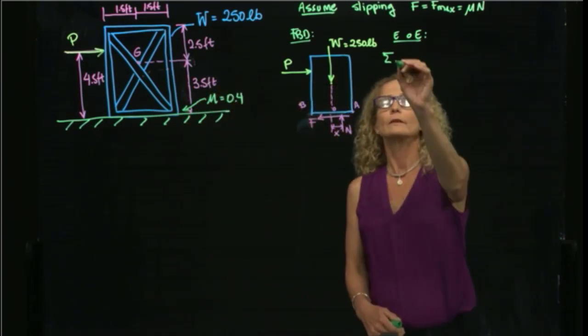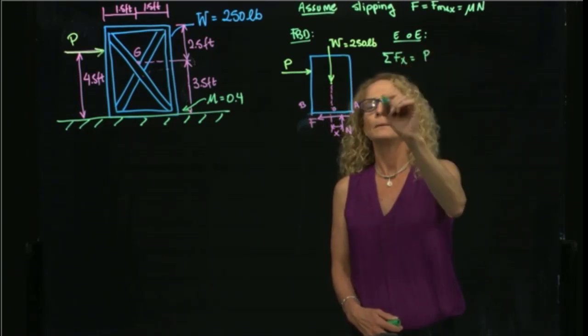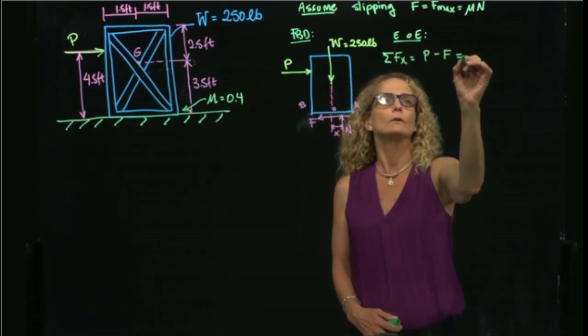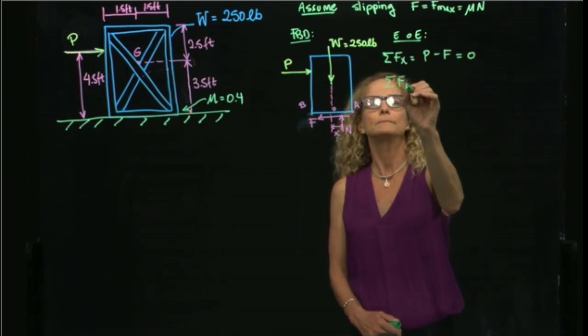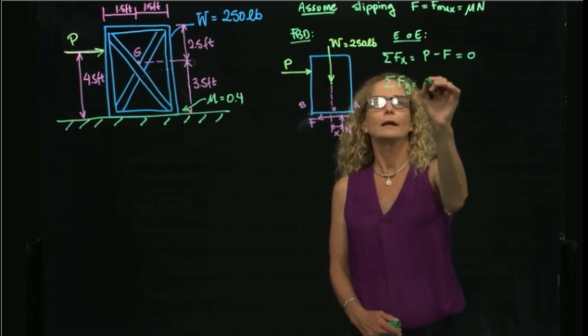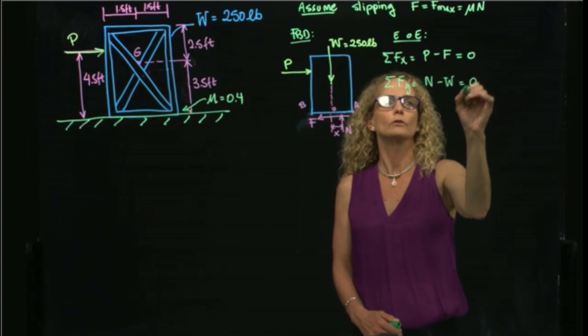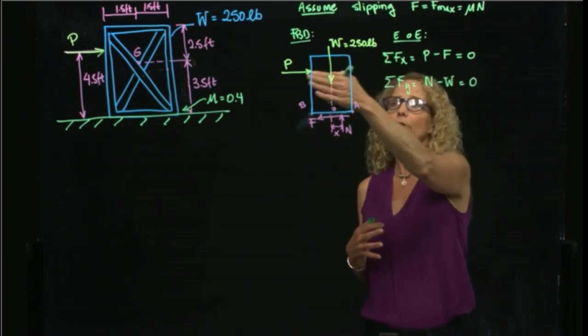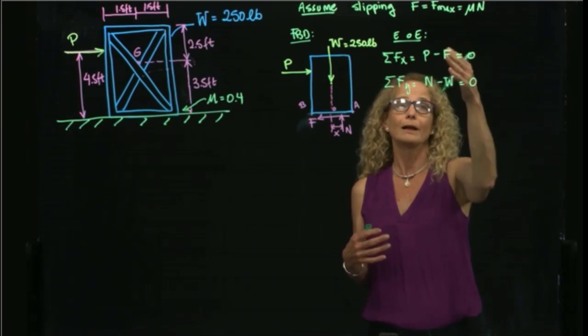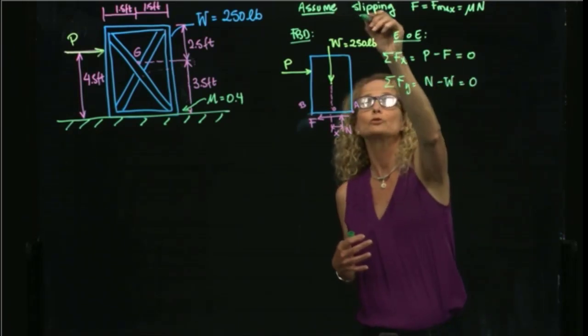Okay, so I am adding forces in x, and I find that P minus F is equal to 0. Then I am adding my forces in y, and I have that N minus weight is equal to 0. So here I have three unknowns, because I want to find P, I don't know N, I don't know F. But since I am assuming slipping,